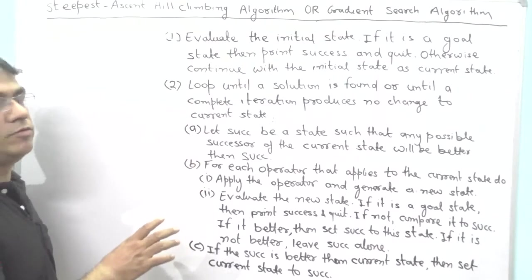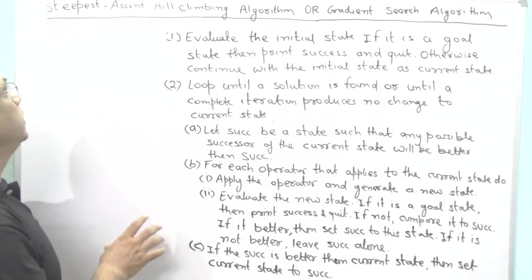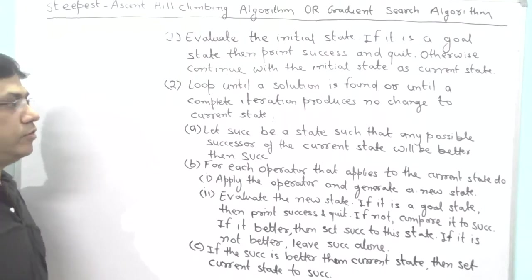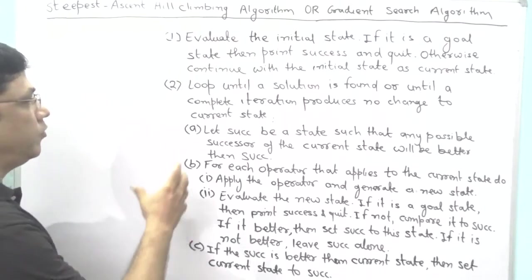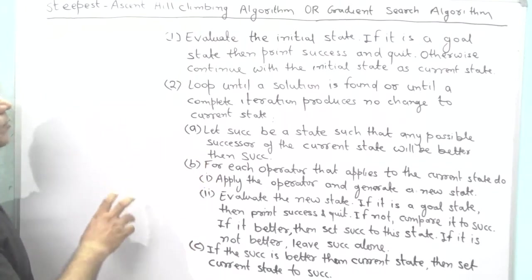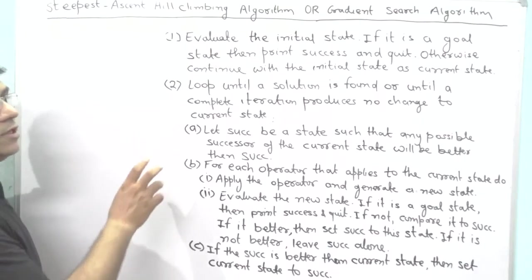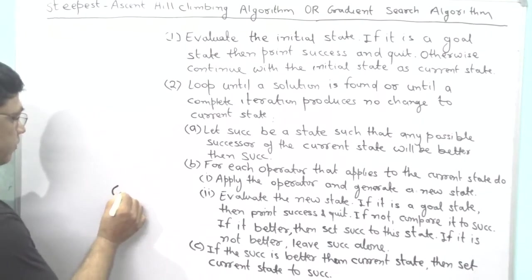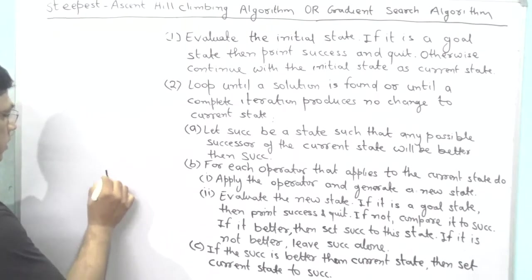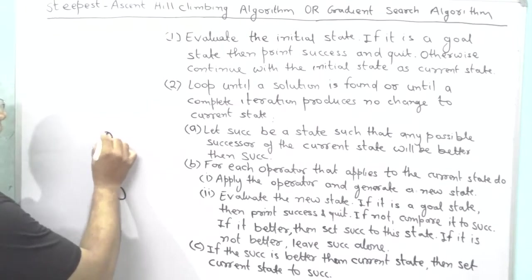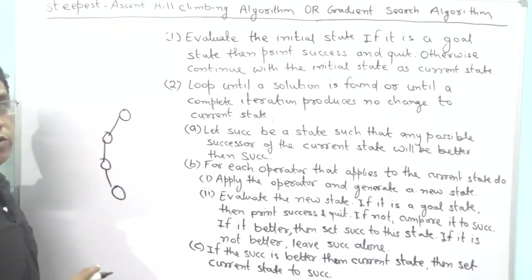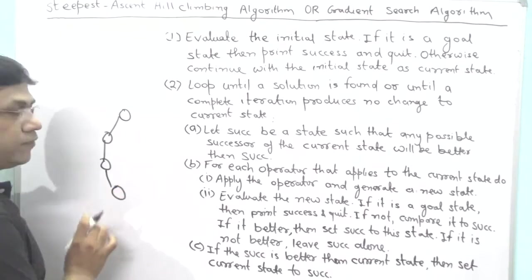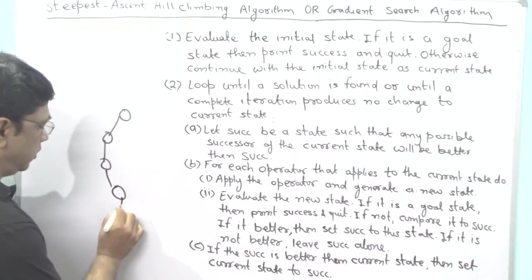I have written here the algorithm for the Steepest Ascent Hill Climbing Algorithm, also called the Gradient Search Algorithm. Before explaining the algorithm, let me clarify the whole concept. Suppose this is a path in which we want to find our goal node. We will make the first node the initial node.